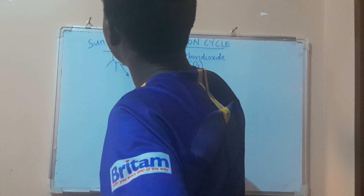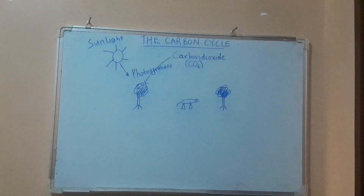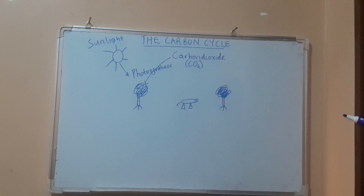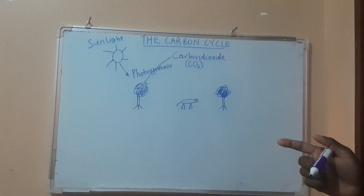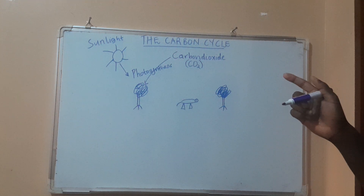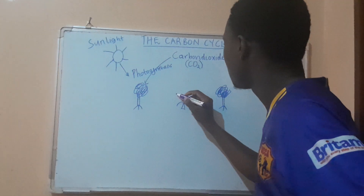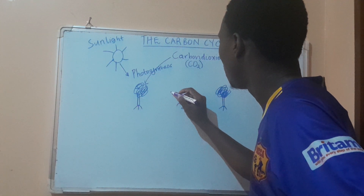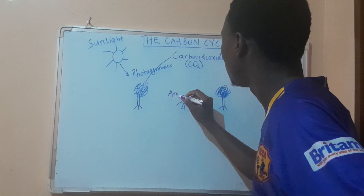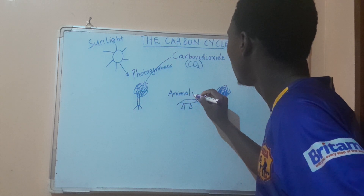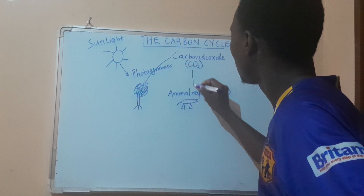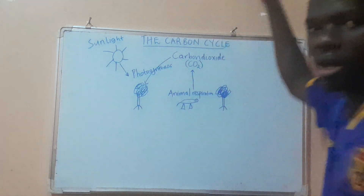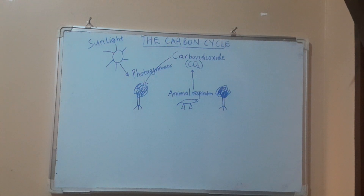Sunlight is required for photosynthesis. Also, this is an animal — when this animal respires, during the process of respiration it releases carbon dioxide. We are going to put an arrow up because animal respiration adds carbon dioxide to the atmosphere.